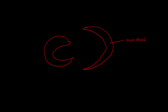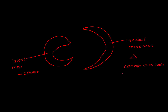The medial meniscus is more of a semilunar shape, whereas the lateral meniscus is more or less circular. If you take a cross section, these menisci are triangular, with a convex outer border and a thin concave inner border.